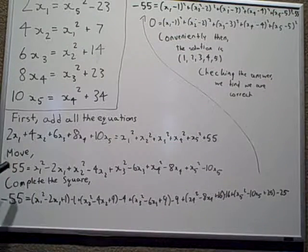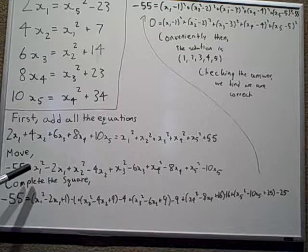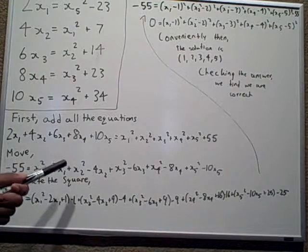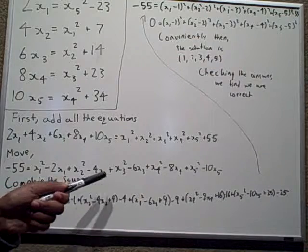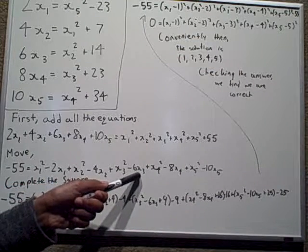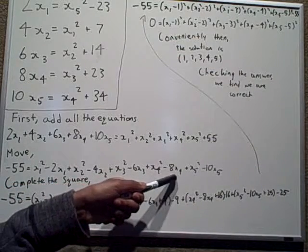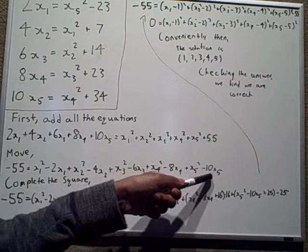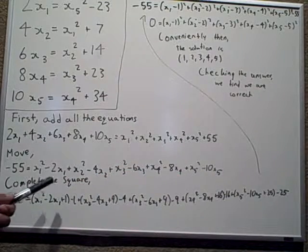Then you move them all, so negative 55 equals x1 squared minus 2x1 plus x2 squared minus 4x2 plus x3 squared minus 6x3 plus x4 squared minus 8x4 plus x5 squared minus 10x5. You should complete the square.